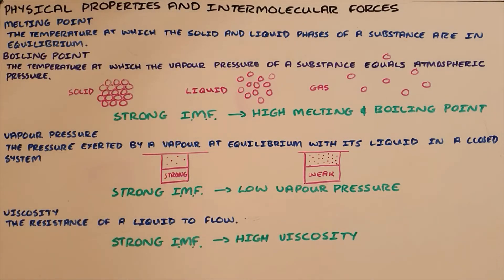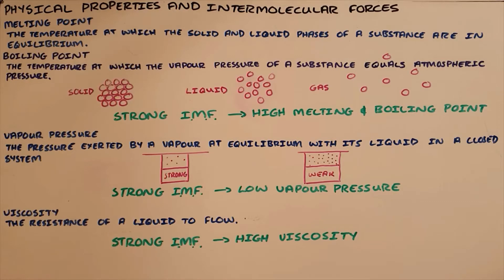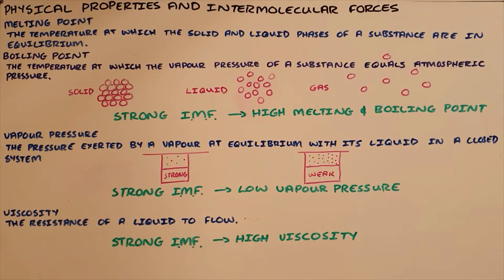The fourth and less common physical property is viscosity, which is the resistance of a liquid to flow. A substance like honey has a very high viscosity because it is very resistant to flow, while water has a very low viscosity because it flows very easily. That flow is essentially a measure of how strong the intermolecular forces are between particles. If the particles are held together by strong intermolecular forces, the substance does not easily flow, and as a result, strong intermolecular forces result in a high viscosity.